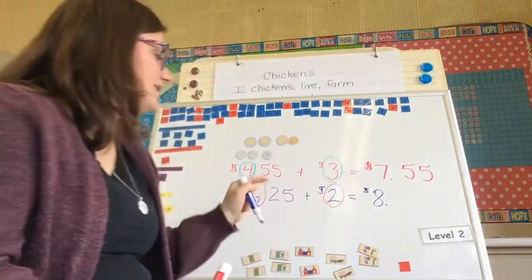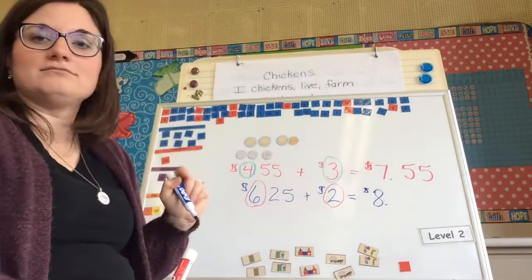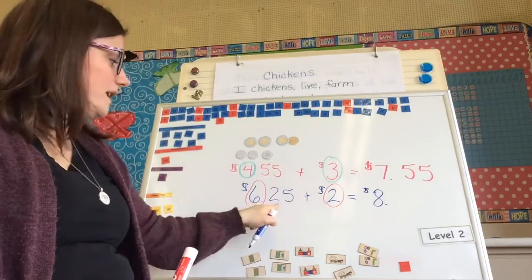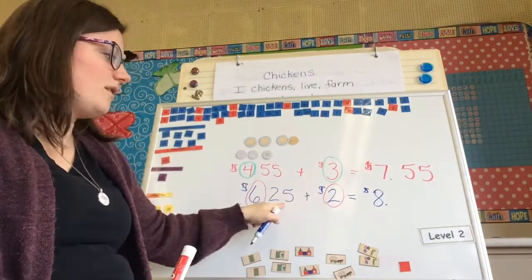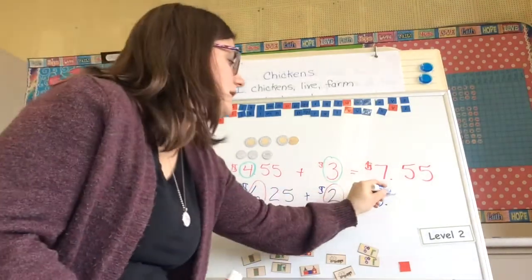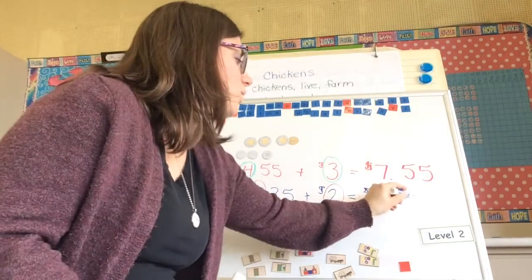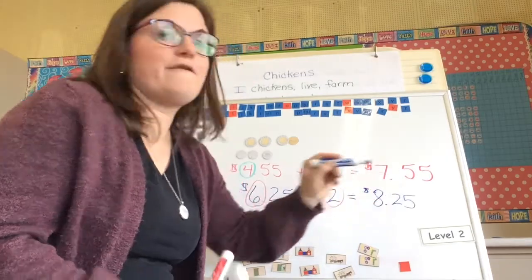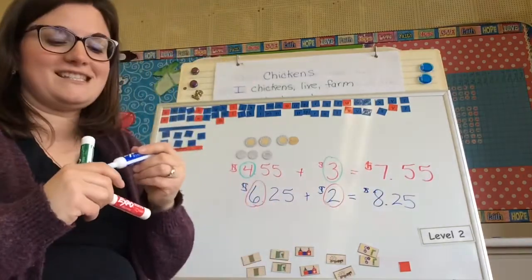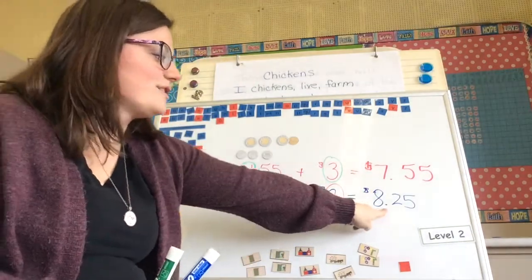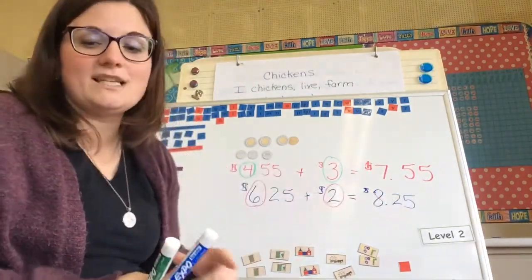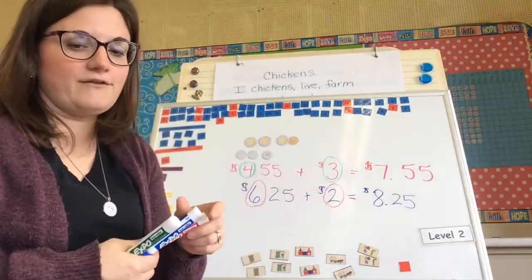Did the cents change at all? No — I had $0.25 here but nothing over here, so I still have $0.25. So my total would be $8.25.